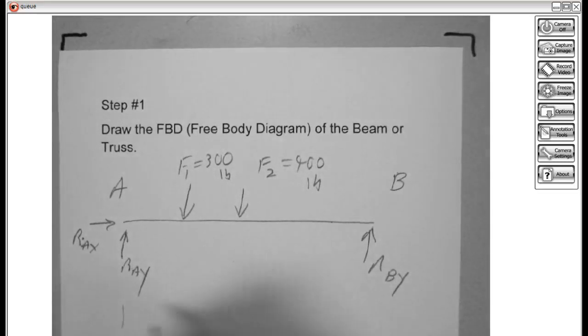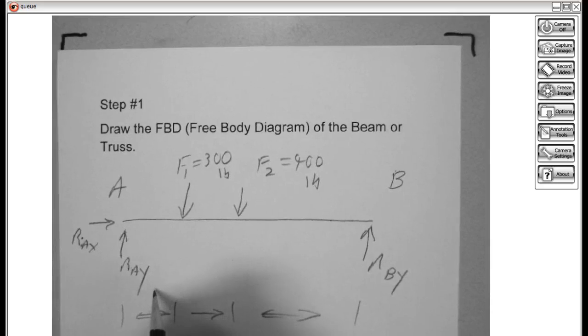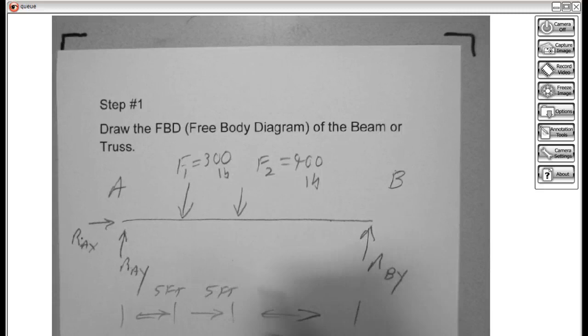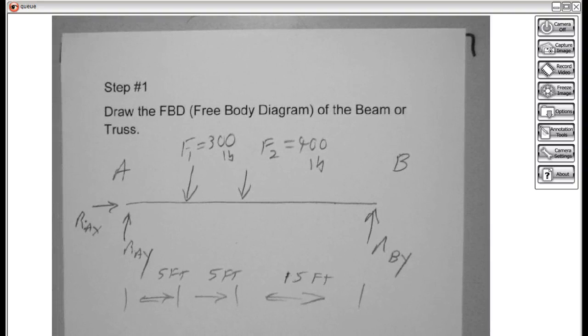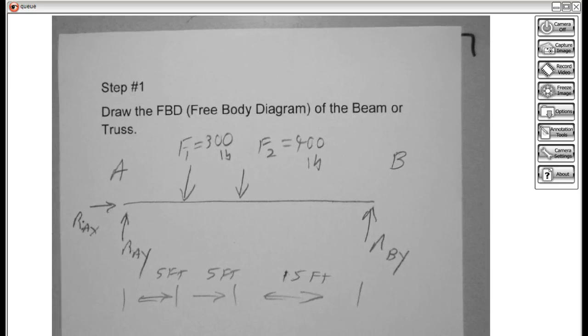F2 which is 400 pounds. We make sure that we fully dimension our drawing here, our free body diagram. This is 5 feet, another 5 feet, and this is 15 feet, gives us an overall dimension of 25 feet. Let me reiterate, you want a fully correct free body diagram of your beam or truss. In this case we're doing a beam. That is step 1.